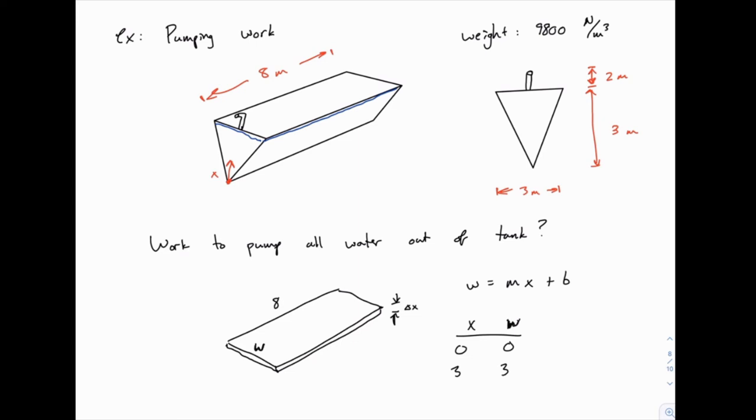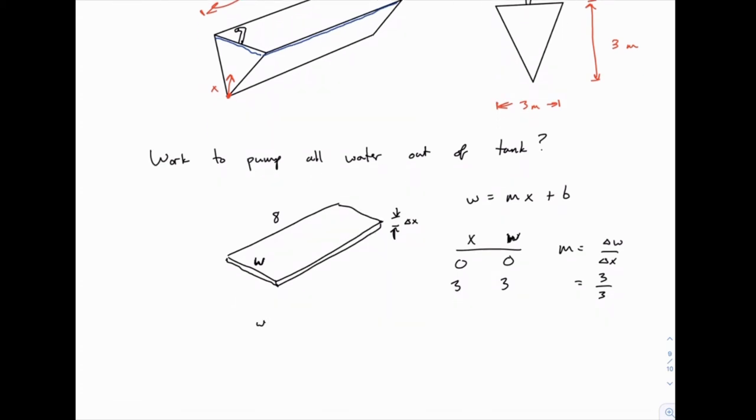And again, if we placed the origin at the top of the tank, we would have zero, three, and three, zero instead. But the general approach would be basically the same. Again, because we've done this carefully, the intercept will just be zero. So b is zero, and then the slope is change in w over the change in x. The difference between those w values is three, and so is the difference between the x values. So really simply, width just equals x at this point.